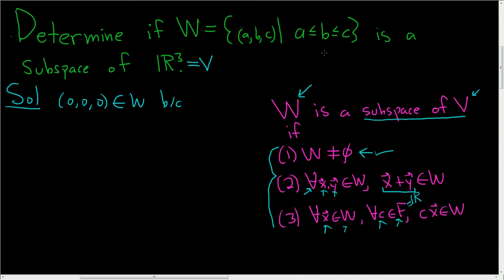what does it mean to be in W? The first component is less than or equal to the second, which is less than or equal to the third. So in this case, this is a, this is b, this is c, and we certainly have zero less than or equal to zero less than or equal to zero. So that means that W is non-empty. So condition one checks.